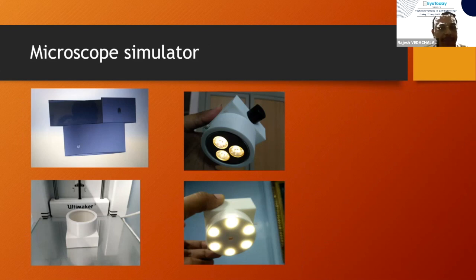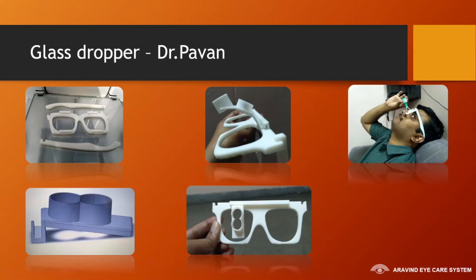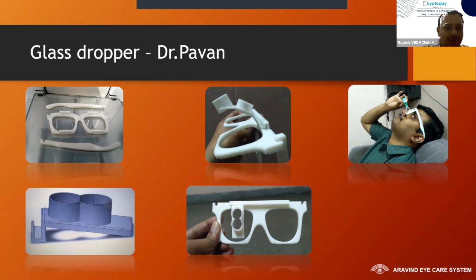We have also designed a microscope simulator for FACO and FLAP surgery. We counsel FACO patients to look at the light — in the operating theater there are many lights, and seeing this simulator light helps them know how the microscope light looks so they cooperate better. Dr. Pavan has also come out with a dual eye dropper for putting drops in both eyes — you put the drop in one eye, slide it to the other, and drop, so it falls exactly on the eye. This will be helpful for glaucoma patients who need to put drops daily in both eyes.